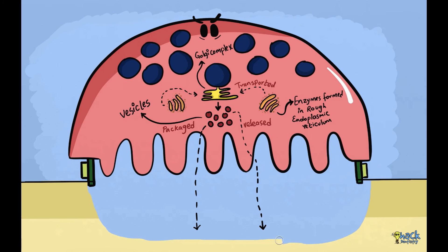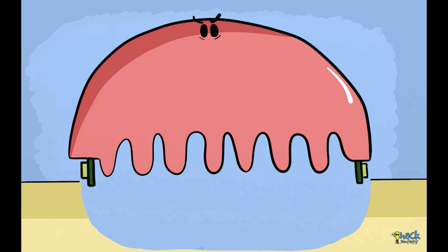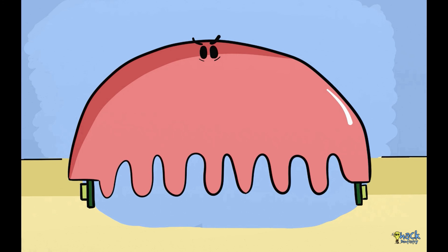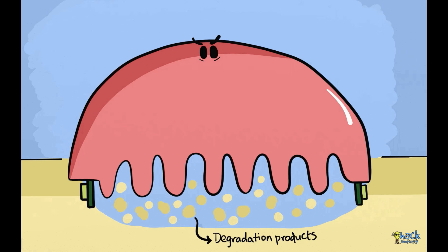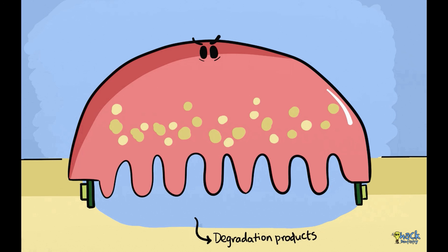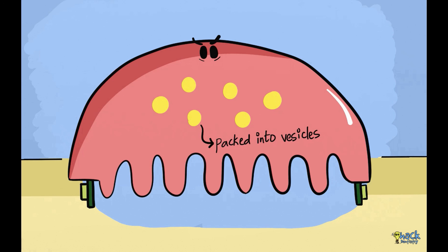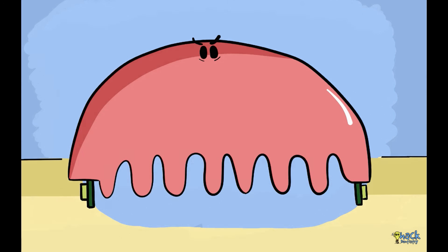On digestion of the organic matrix, the bone develops a shallow depression called Howship's lacunae. Following the resorption, the degraded products are endocytosed via the ruffled border, packed into vesicles, and released extracellularly by exocytosis through the membrane opposite the ruffled border.